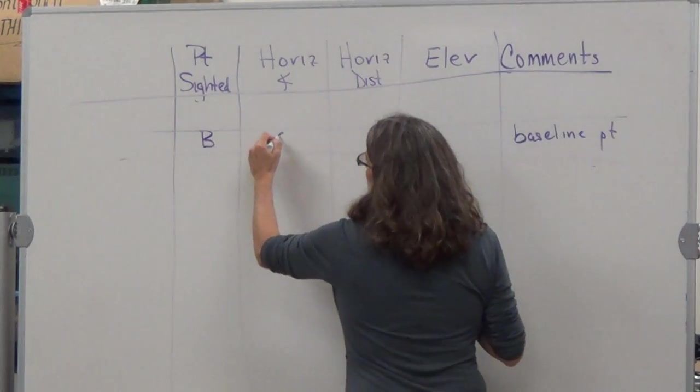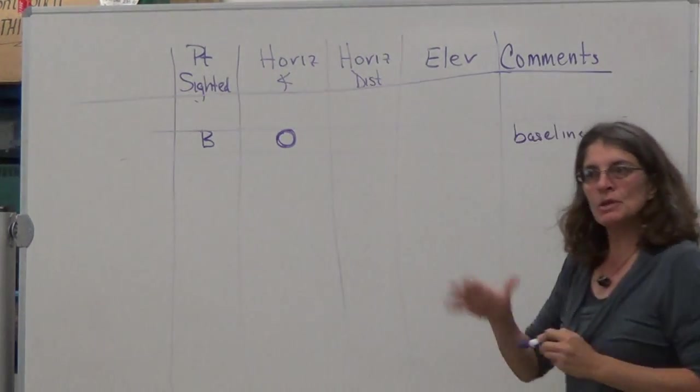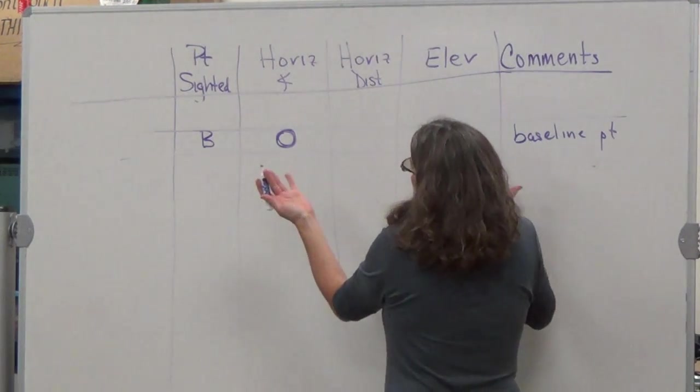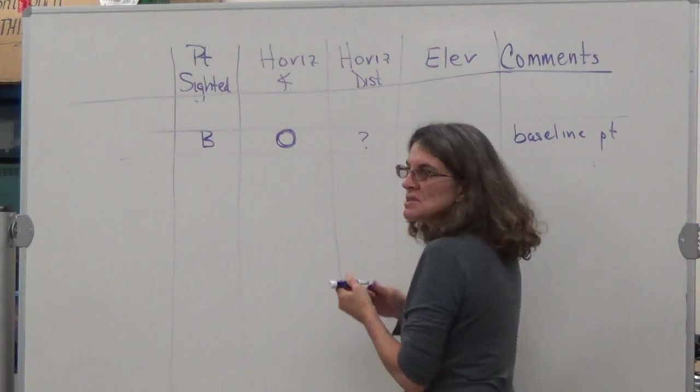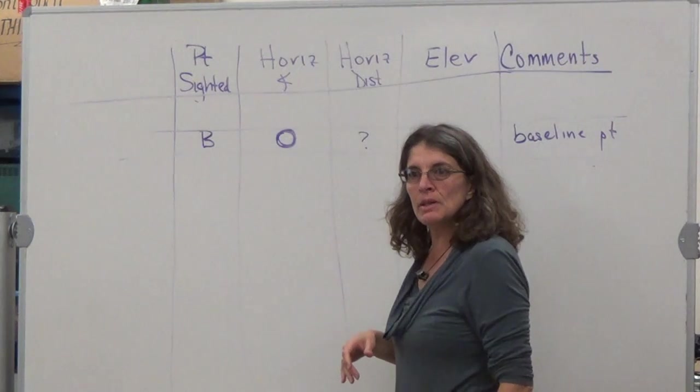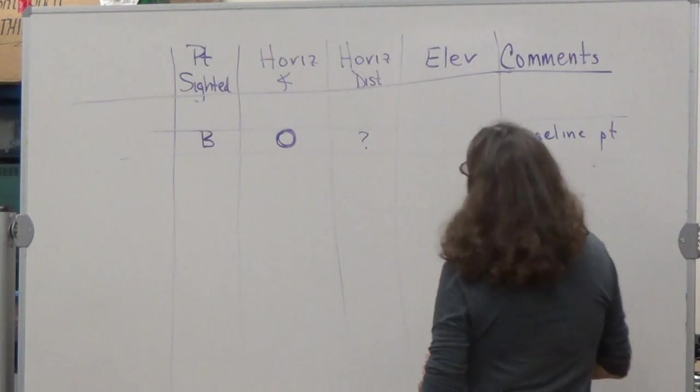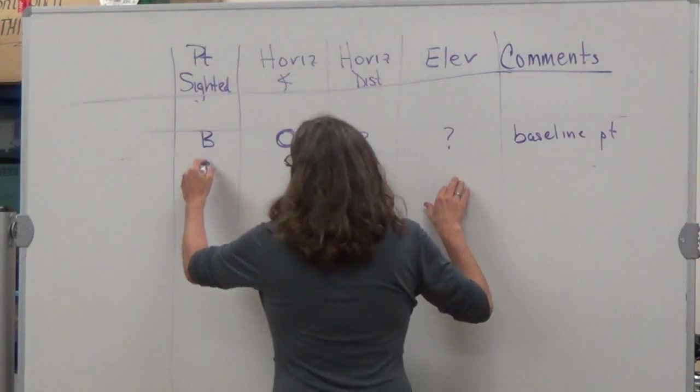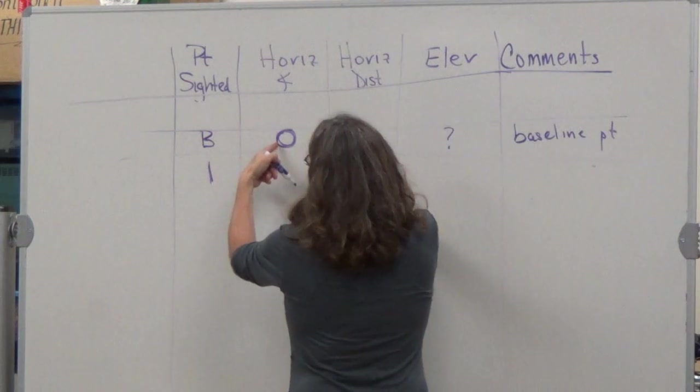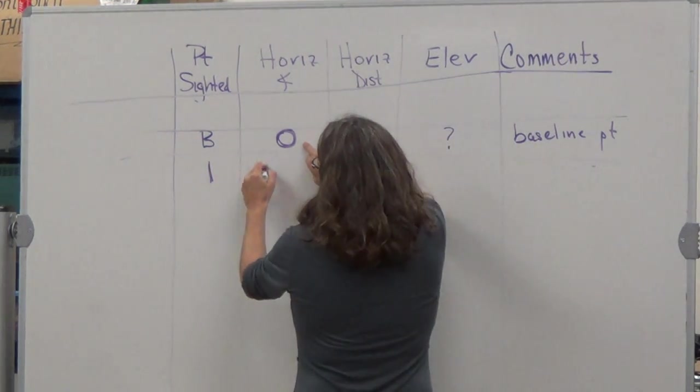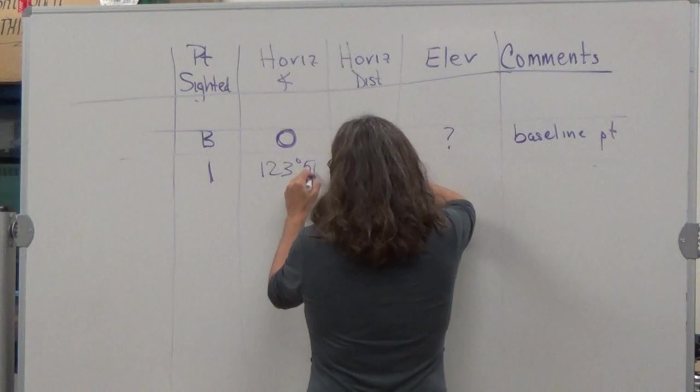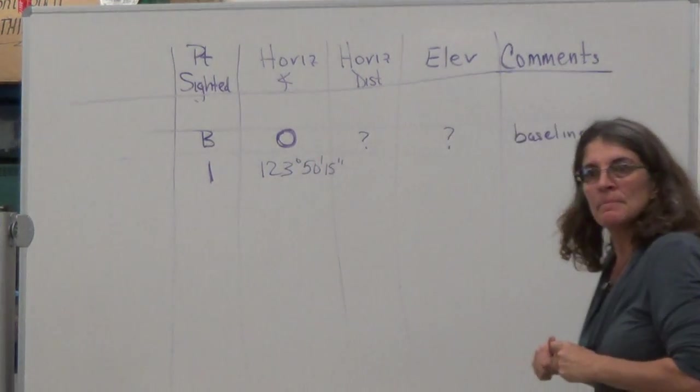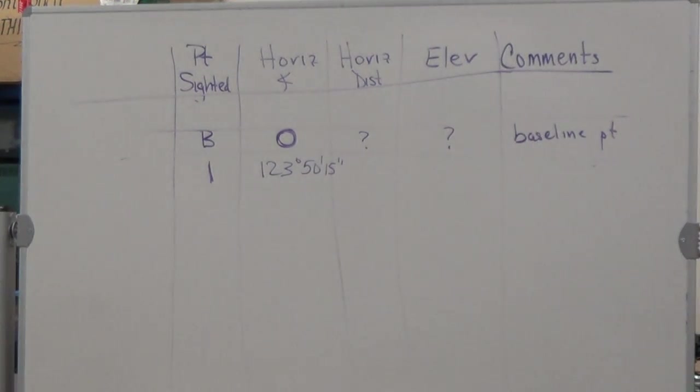And the horizontal angle then would be zero, right? If I'm shooting a baseline, I'm calling it a baseline, that would be zero. And the horizontal distance would be whatever the horizontal distance happens to be from me to that point. And the elevation is whatever elevation I find. And then everything else is being measured from here. So if this is the zero, then when I turn 120 degrees 3 minutes 50 seconds 15 seconds, I know I'm coming off of B.